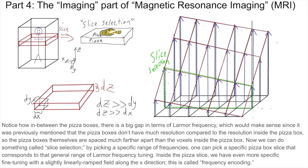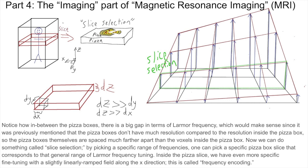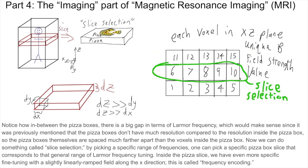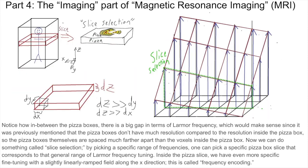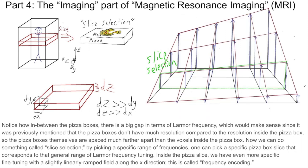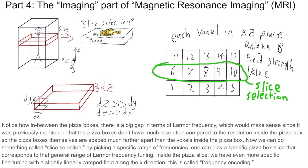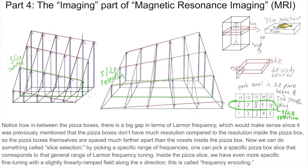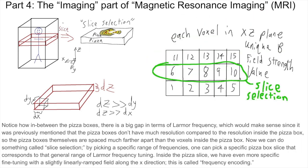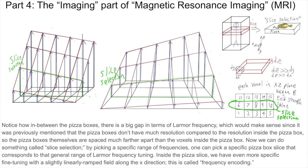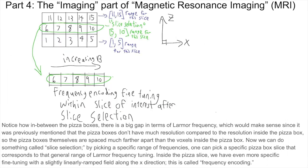Notice how in between the pizza boxes there is a big gap in terms of Larmor frequency, which would make sense since between the pizza boxes there is much less resolution compared to the resolution inside within a pizza box. So the pizza boxes themselves are spaced much farther apart than the voxels within inside the pizza box. Now we can do something called slice selection. By picking a specific range of frequencies, one can pick a specific pizza box slice that corresponds to that general range of Larmor frequency tuning. Inside the pizza slice, we have even more specific fine-grained fine-tuning with a slightly linearly ramped field along the X direction. This is called frequency encoding.